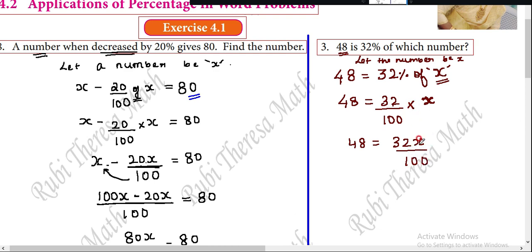48 equals 32x by 100. 100 goes to the other side. In the division it's here, so 100 multiplies 32x. 48 into 100 equals 32x. This is x. x multiply by 32. Multiplication of 32 inside. 48 into 100 already exists. Multiplication of 32 inside. Divide by 32.